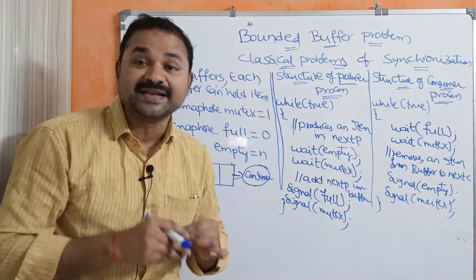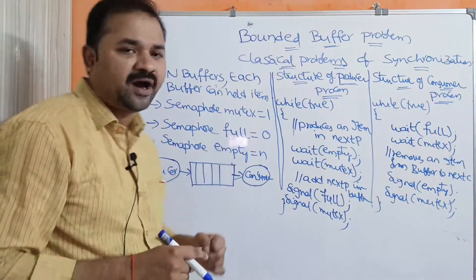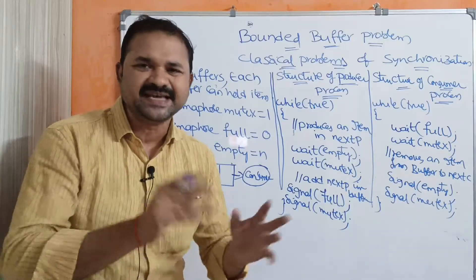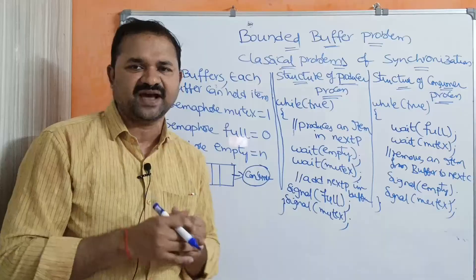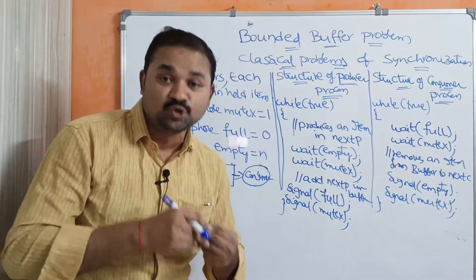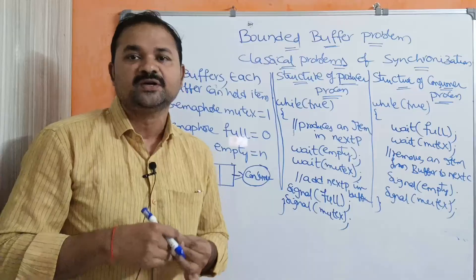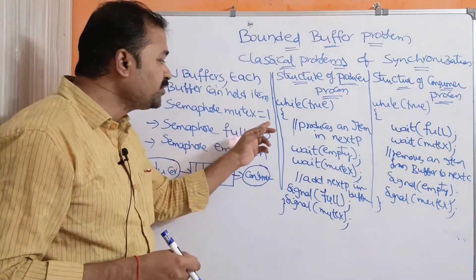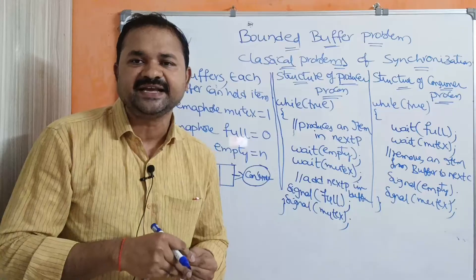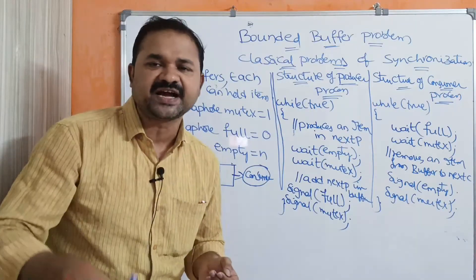The mutex semaphore is a binary semaphore, meaning its value may be either 1 or 0. Full and empty are counting semaphores, meaning their value may be any integer value — 0, 10, 30, or any integer value. The initial value of mutex is 1. Mutex stands for mutual exclusion; this semaphore variable is mainly useful to achieve mutual exclusion. If mutex equals 1, it specifies that the critical section is free. If mutex equals 0, it specifies that the critical section contains a process.